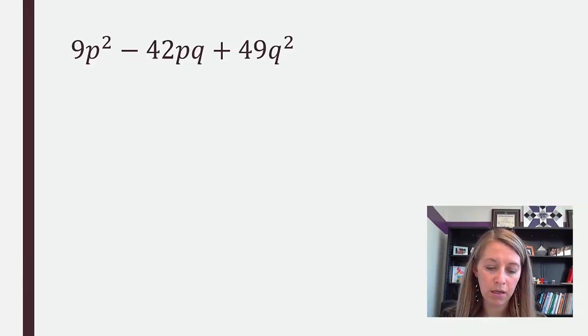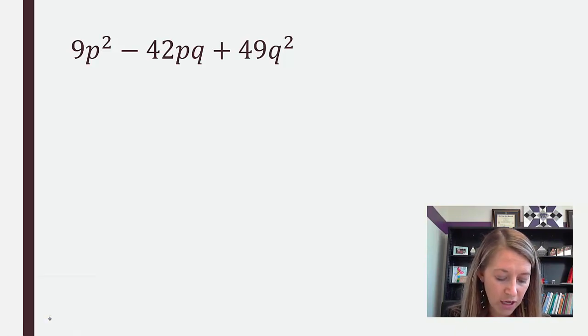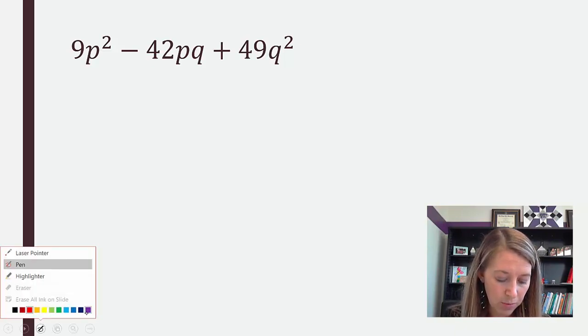Okay, so the first example that we see here, we can see that this one is in descending order. It has no common factors and of course there's three terms, so therefore it is a trinomial. So at first glance, there's nothing special about this and there isn't. We'll see the special case when we actually already factor it just like we typically do.